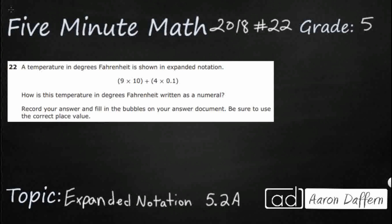So we have a temperature in degrees Fahrenheit shown in expanded notation, and we have to write it as a numeral. There's no a, b, c, or d to choose from. It's going to be a free response or griddable response answer. So let's see if we can figure out what number this is: 9 times 10 plus 4 times 0.1.